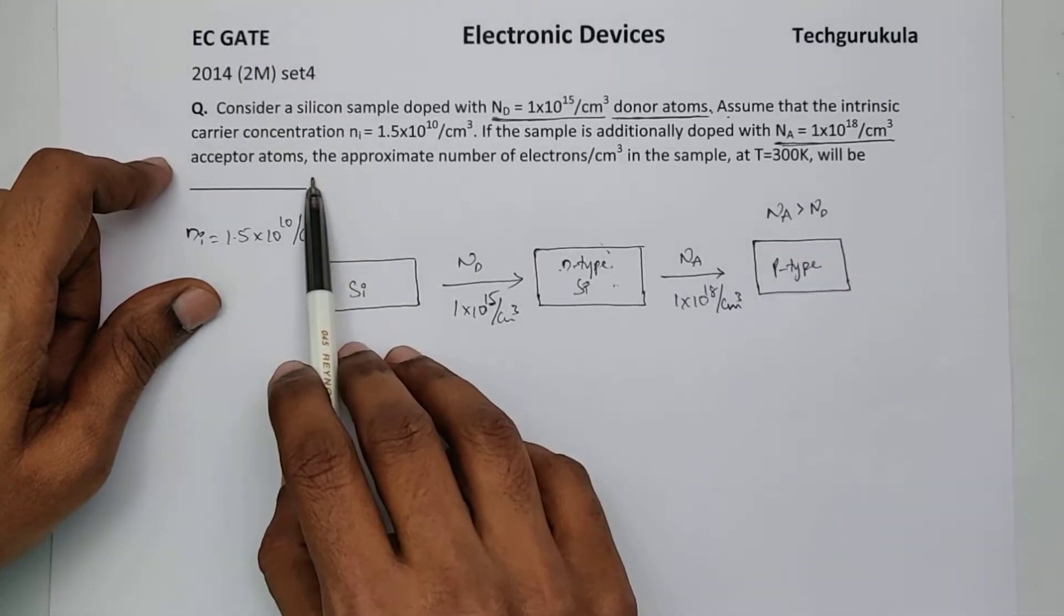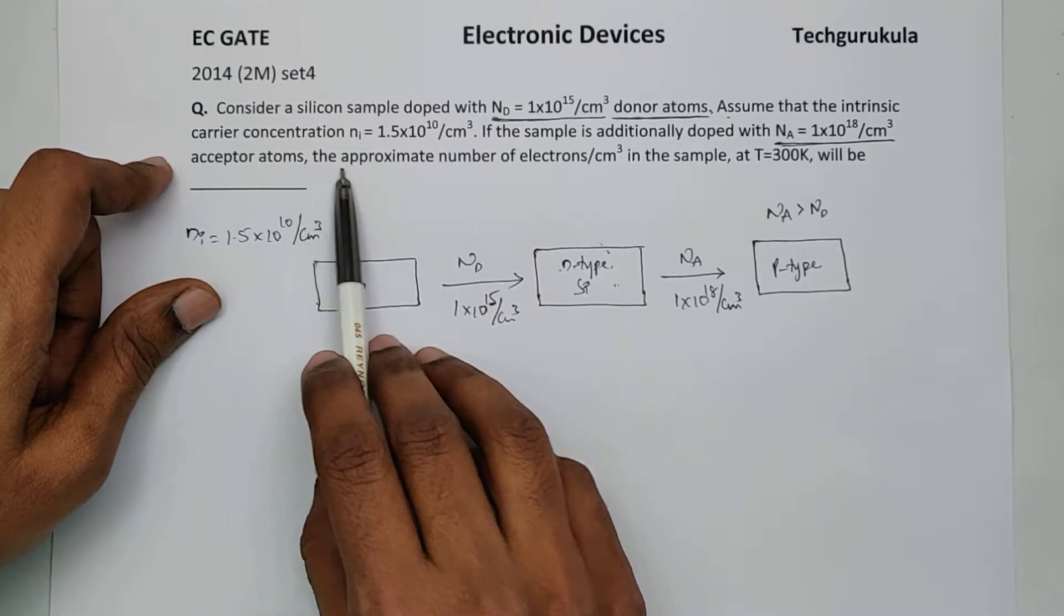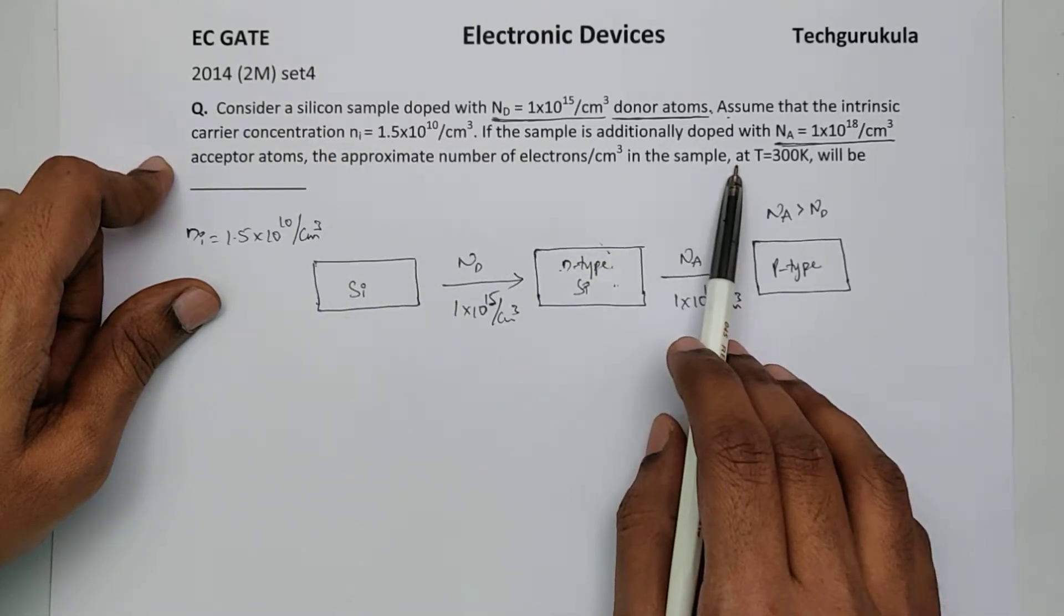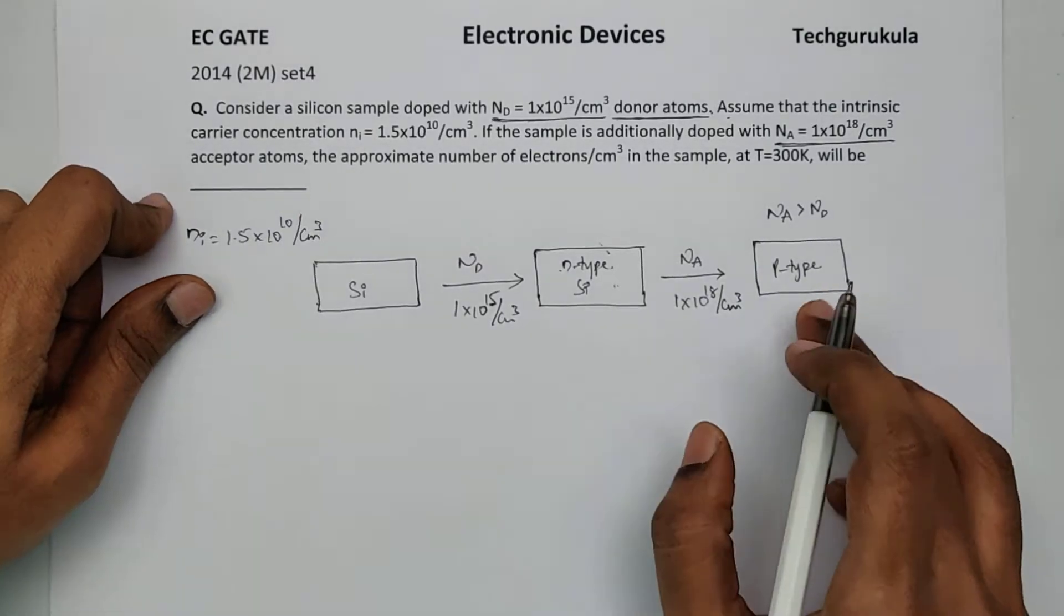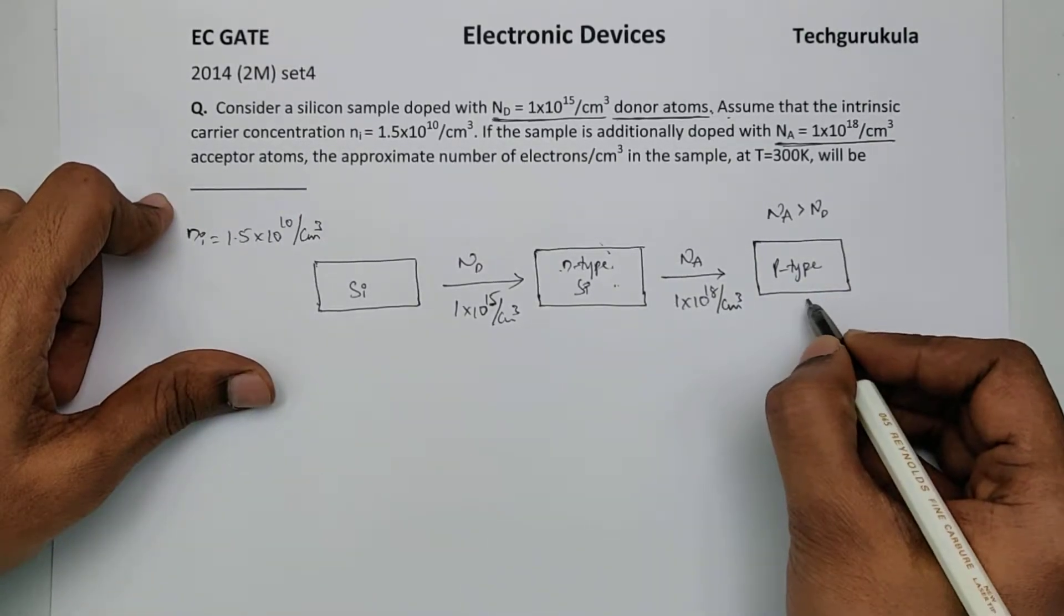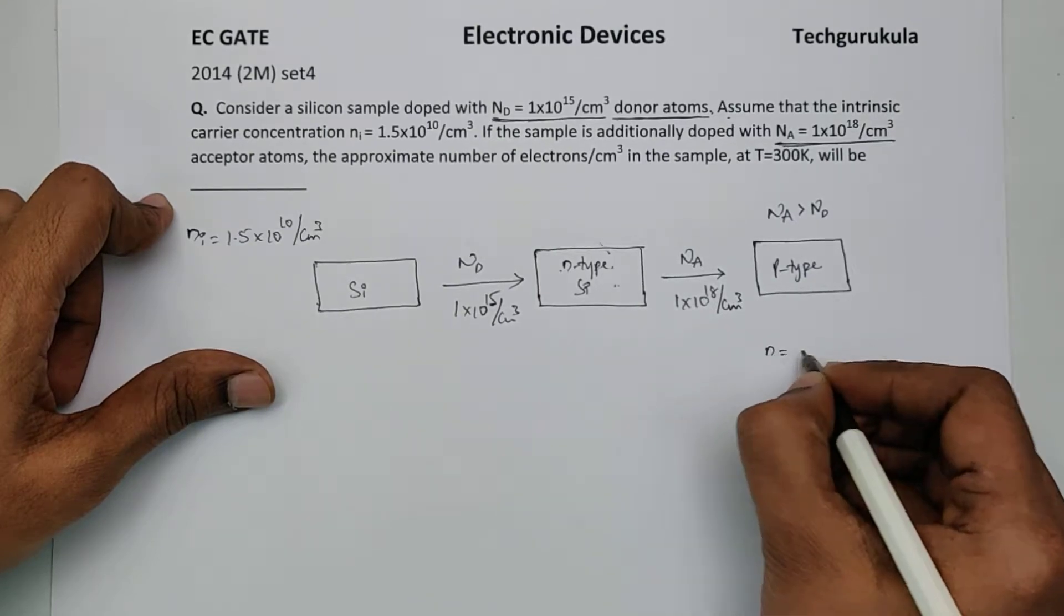Now the question is: the approximate number of electrons per centimeter cube in the sample at T equal to 300 Kelvin will be dash. So now in this semiconductor the electron concentration is the question mark.